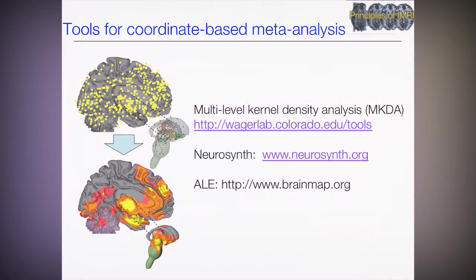Let's look at some tools for doing meta-analysis and how we can use them. One tool for coordinate-based meta-analysis that you can download is called Multi-Level Kernel Density Analysis, or MKDA. Another tool is a web-based tool called Neurosynth.org. And finally there's BrainMap.org, which is a repository of coordinates and a tool for doing activation likelihood meta-analysis — a very similar method to MKDA.